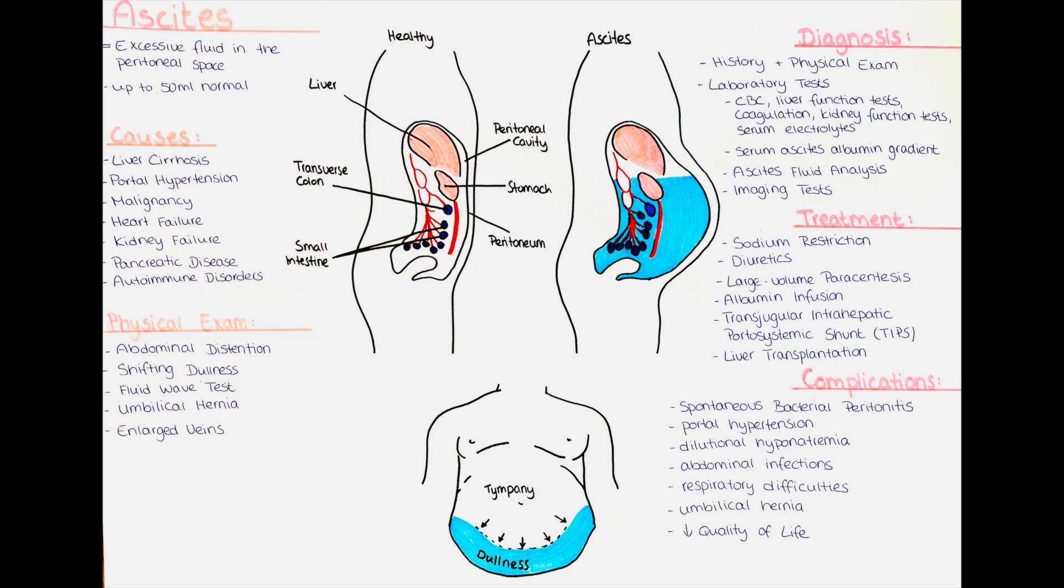Ascites can cause dilutional hyponatremia, which is an imbalance in the body's electrolyte levels. Excessive fluid accumulation leads to a decrease in the concentration of sodium in the bloodstream, resulting in hyponatremia. Severe hyponatremia can cause neurological symptoms and can be potentially life-threatening.